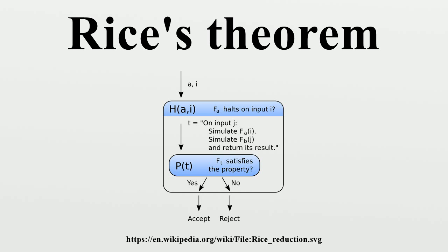According to Rice's theorem, if there is at least one computable function in a particular class C of computable functions and another computable function not in C, then the problem of deciding whether a particular program computes a function in C is undecidable. For example, Rice's theorem shows that each of the following sets of computable functions is undecidable: the class of computable functions that return zero for every input and its complement; the class of computable functions that return zero for at least one input and its complement; the class of computable functions that are constant and its complement.